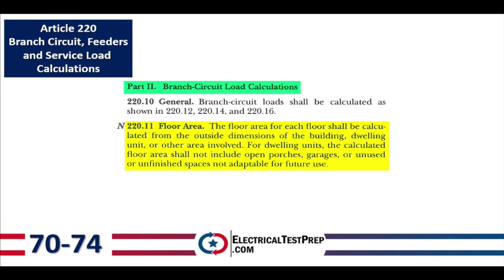In this article, we're going to learn how to do our dwelling unit calculations. One of the first pieces of information we need is the square footage of the area — basically just heated area. Open porches, garages, or unused or unfinished spaces not adaptable for future use are excluded. For example, a basement with inadequate ceiling height would not be included.